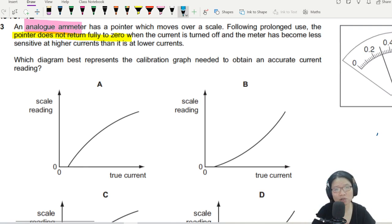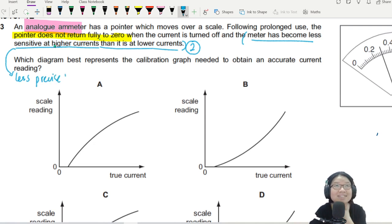We got so many issues. The meter has become less sensitive at higher currents than it is at lower currents. So this is issue number two, the sensitivity change. Less sensitive here also means less precise. In other words, the scales are closer to each other at higher readings of I.